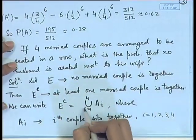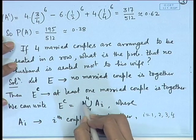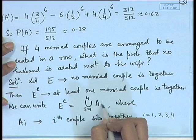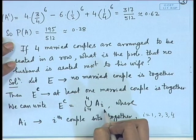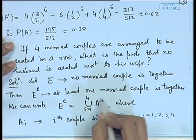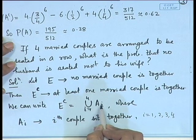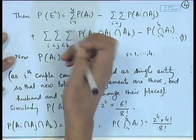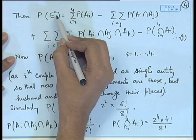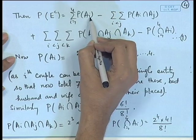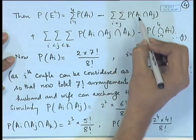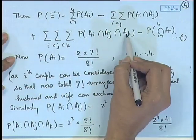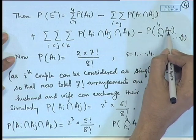Notice this is a clever representation. An alternative union of B_i — where B_1 = one couple sits together, B_2 = two couples sit together, etc. — would lead to equally complicated probability evaluations. By the general addition rule, P(E^c) = Σ P(A_i) − Σ P(A_i ∩ A_j) + Σ P(A_i ∩ A_j ∩ A_k) − P(A_1 ∩ A_2 ∩ A_3 ∩ A_4).